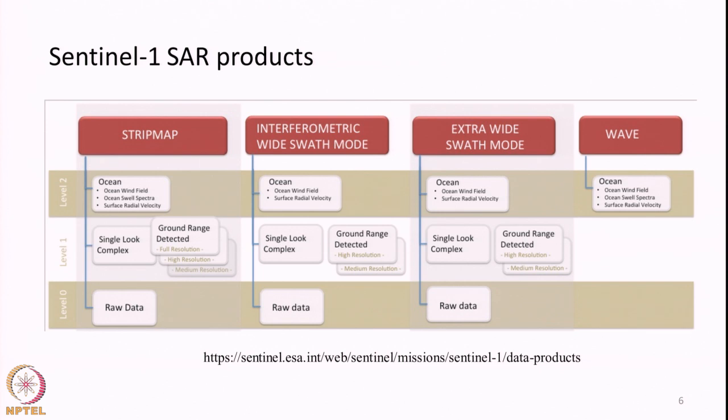This slide shows an example of the different products available from the Sentinel-1 SAR satellite, which is a synthetic aperture radar satellite operating in C band. Here also we have different levels of data, even in different modes. As I told you at the end of the radar remote sensing lecture, it is possible to acquire data from a SAR satellite in different modes. We can either improve the spatial resolution by decreasing the swath width, or obtain data over a large swath, or obtain polarimetric data in different polarizations.